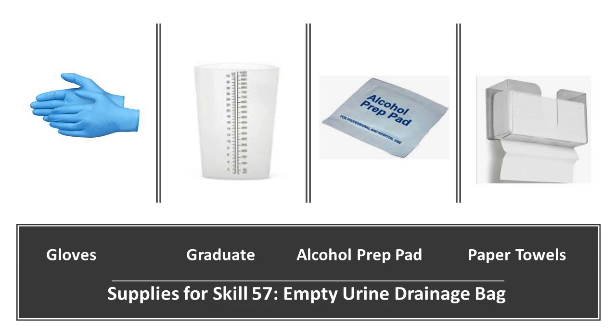Supplies for Skill 57, Empty Urine Drainage Bag, include gloves, graduate, alcohol wipes, and paper towels.